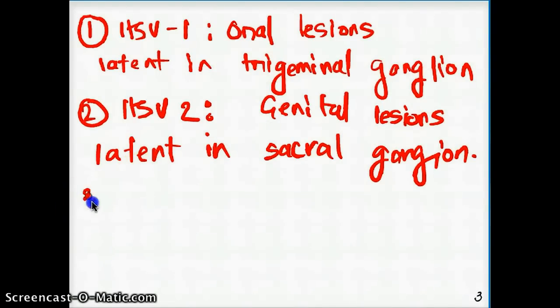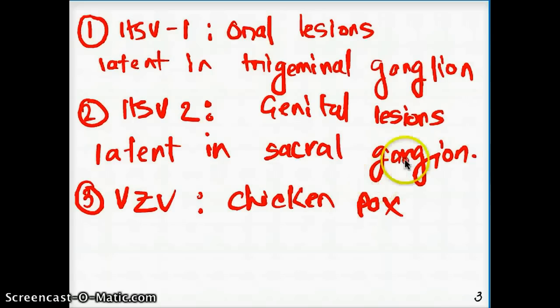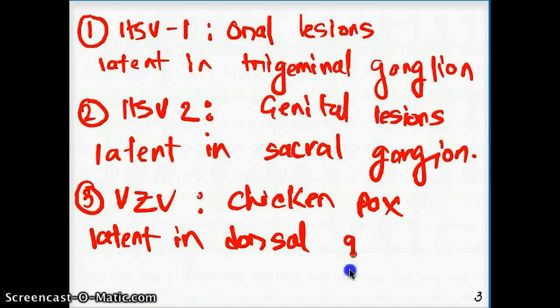Then we have VZV or varicella. This is the one that causes chicken pox. These also can be dormant. They are going to be dormant in dorsal ganglia. So, they can be dormant or latent in dorsal ganglia. And there's a lot of symmetry between the three, right? Because they come from the same family.